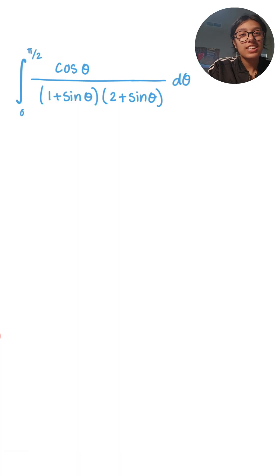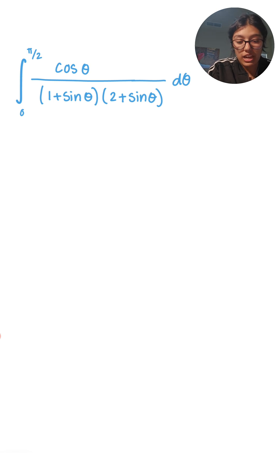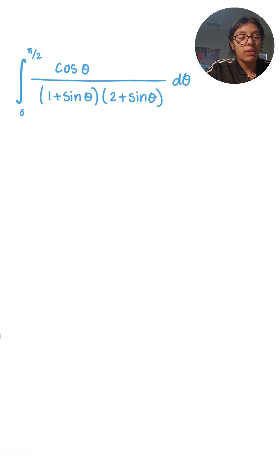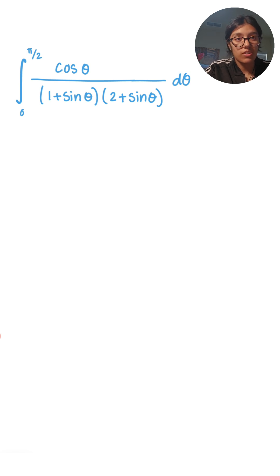Hey guys, Sukanya here. Today we're going to be solving this integral from 0 to π/2 of cos θ over (1 + sin θ)(2 + sin θ) dθ. We are going to be applying both u-substitution and partial fractions to solve this problem, so let's apply u-substitution first.